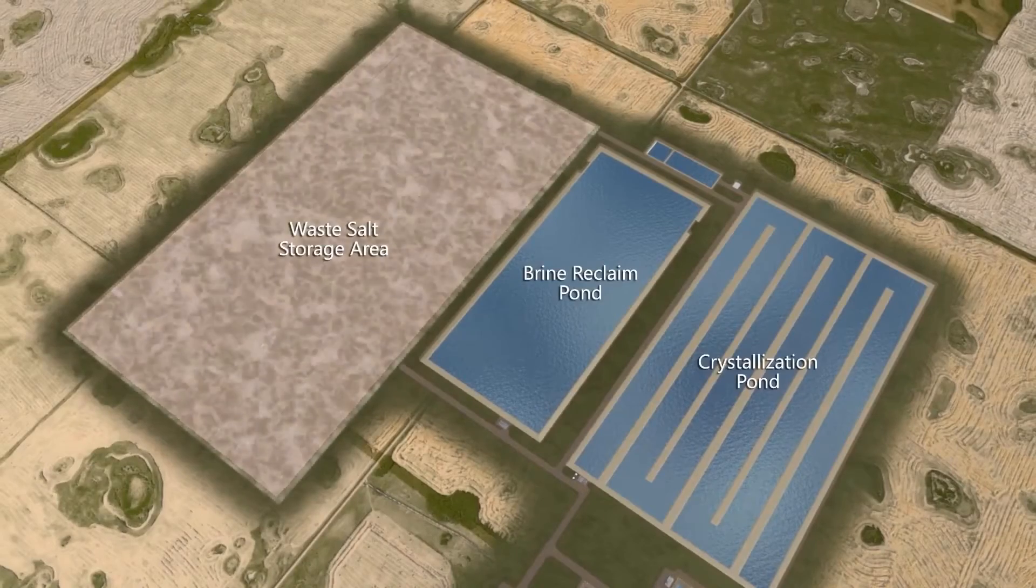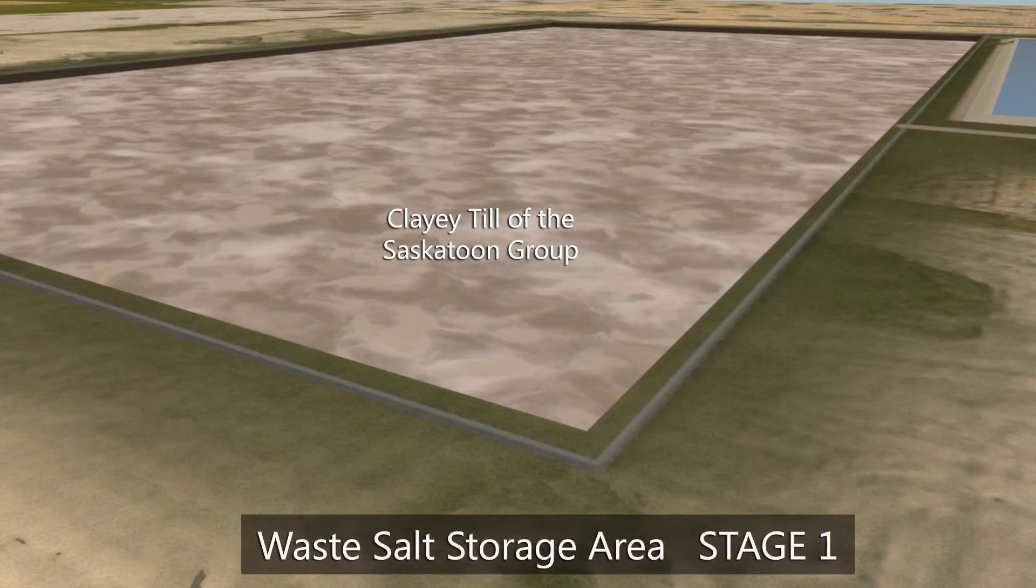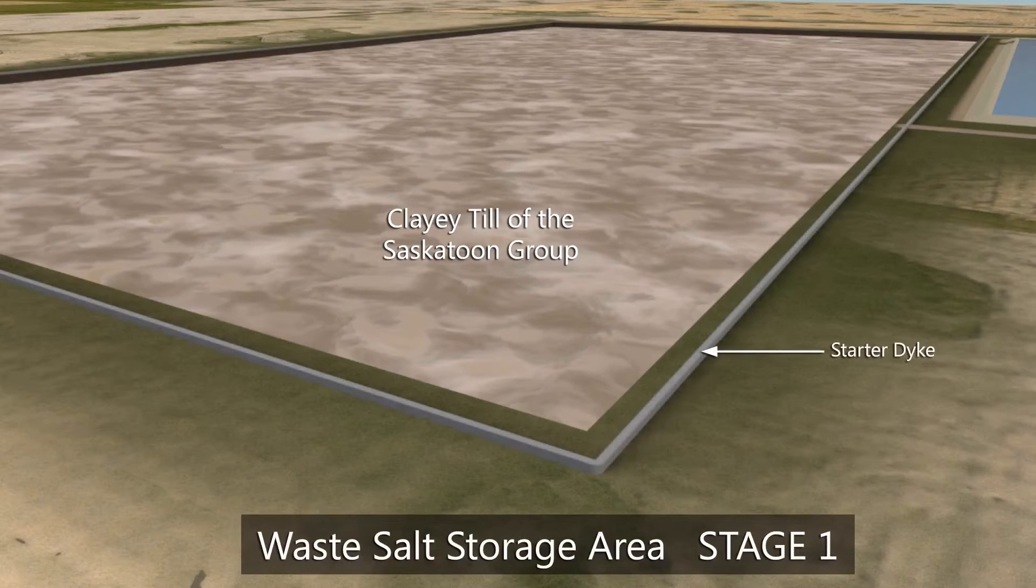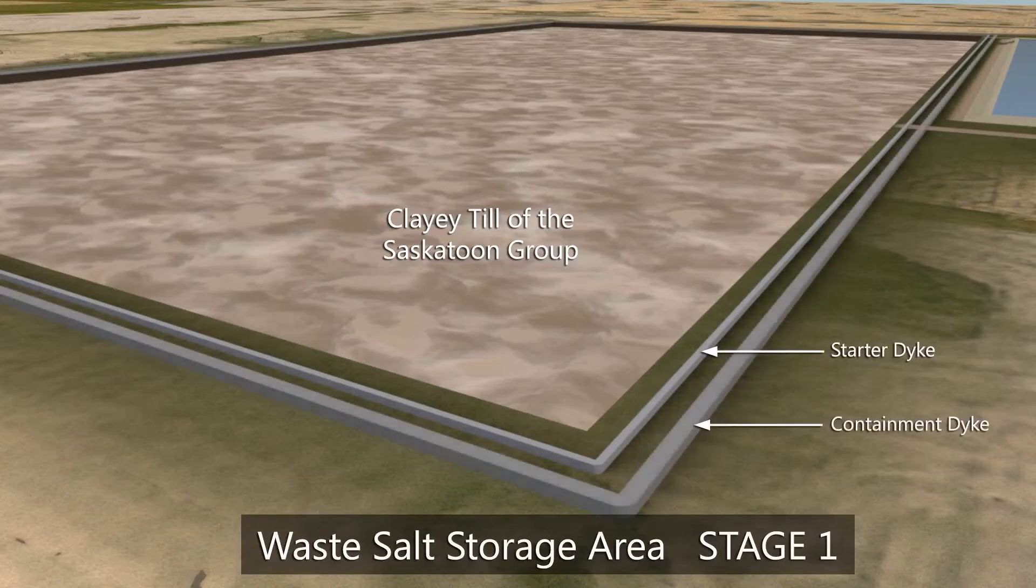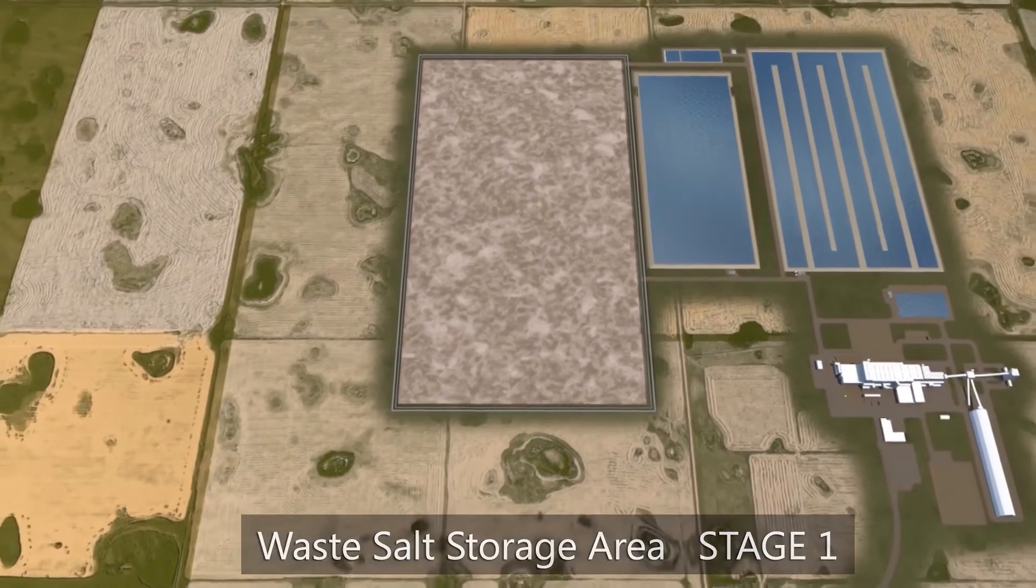Engineered environmental features are required to isolate the salt storage from the surrounding environment. Underneath the salt storage area at a depth of 8 to 11 meters are the clay tills of the Saskatoon group. These clayey tills are the main geological units that will limit the vertical movement of brine from the storage area. As the containment does not rely on a plastic or geotextile liner, which would have limited life spans, the system is referred to as natural containment. The starter dike encompasses the salts and the containment dike collects the brine, which is then sent to the brine reclaimed pond for reuse in the process. A soil cutoff wall will be constructed around the storage area.